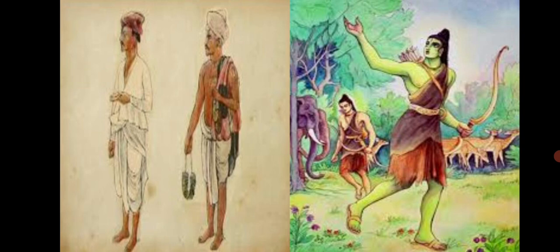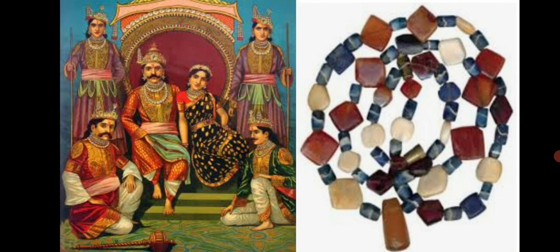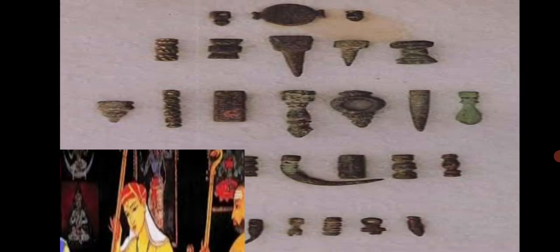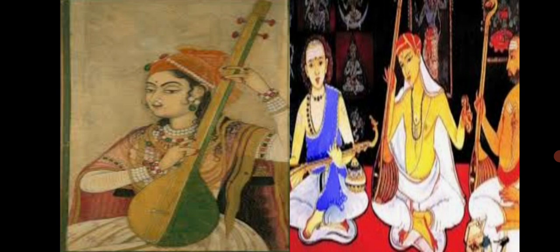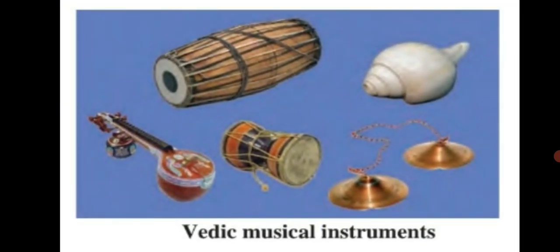People in the Vedic period used cotton and woolen garments. They also used valkals — cloths made from barks of trees — and animal skins as clothing. Men and women used ornaments of gold, flower garlands, and strings made of beads. A pendant called Nishka was popular and was also used as currency. Singing, playing musical instruments, dance, board games, chariot race, and hunting were means of recreation. Main musical instruments were veena, shatatantu, cymbals, and the conch. Percussion instruments like damru and mridanga were also used.